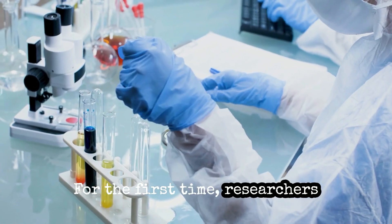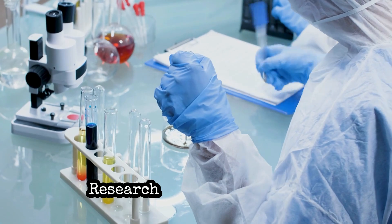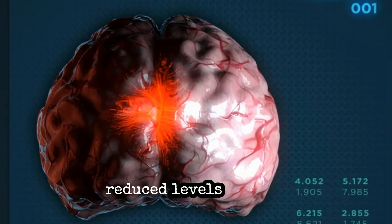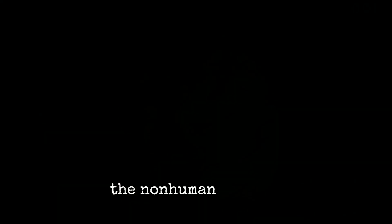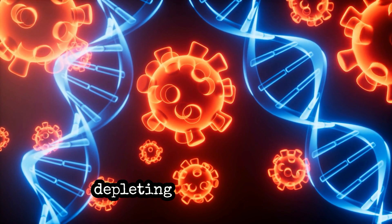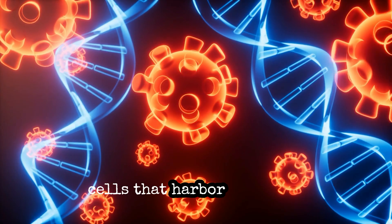For the first time, researchers at Tulane National Primate Research Centre found that a cancer drug significantly reduced levels of SIV, the non-human primate equivalent of HIV, in the brain by targeting and depleting certain immune cells that harbour the virus.